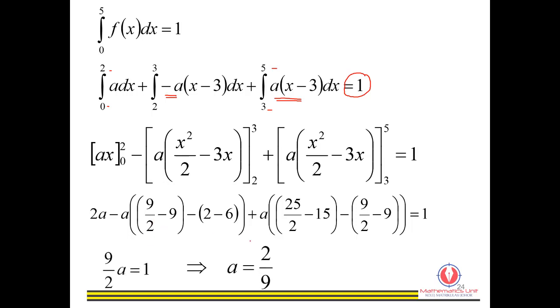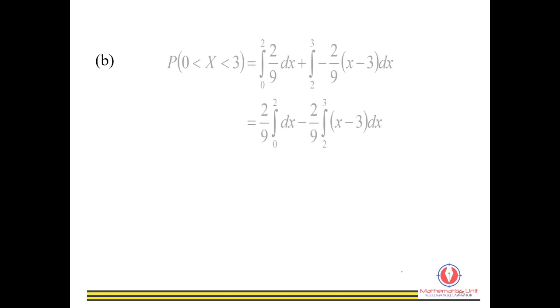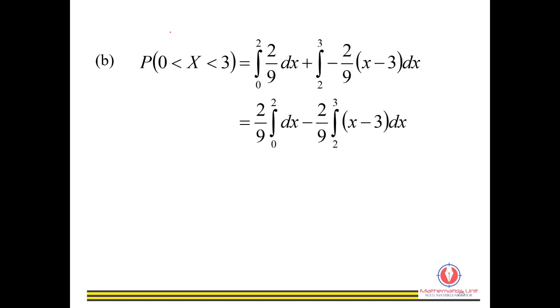After integrating and substituting the values, we get a equals 2 over 9 — this is what we needed to show. Next, to find the probability from 0 to 3, we separate it into 0 to 2 and 2 to 3, since they have different functions, and integrate each part separately.